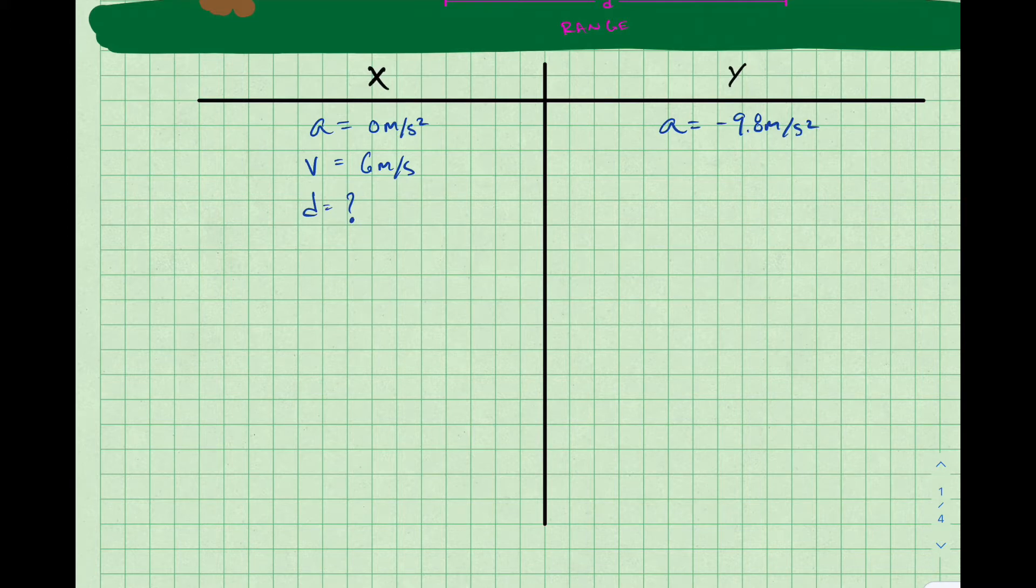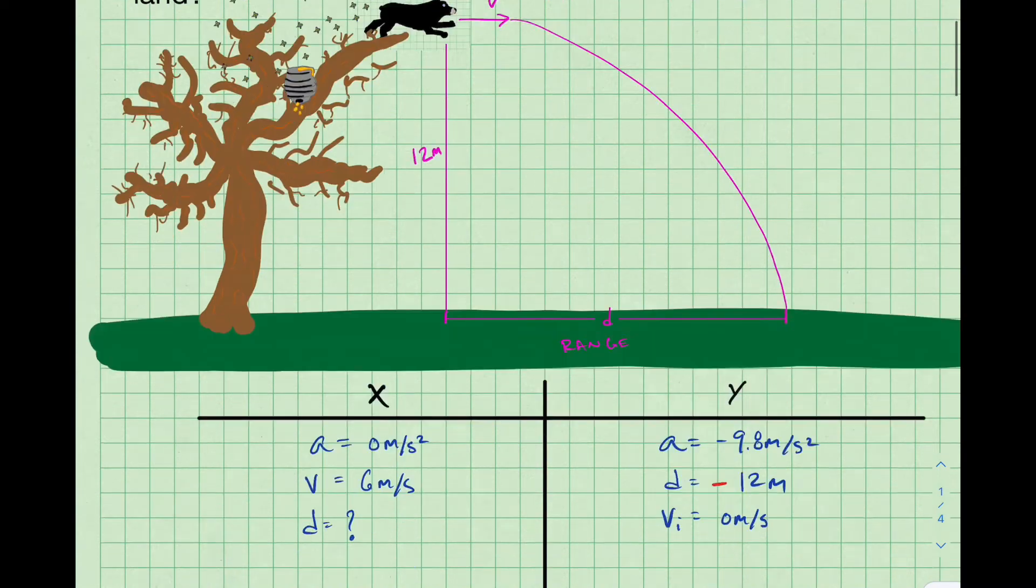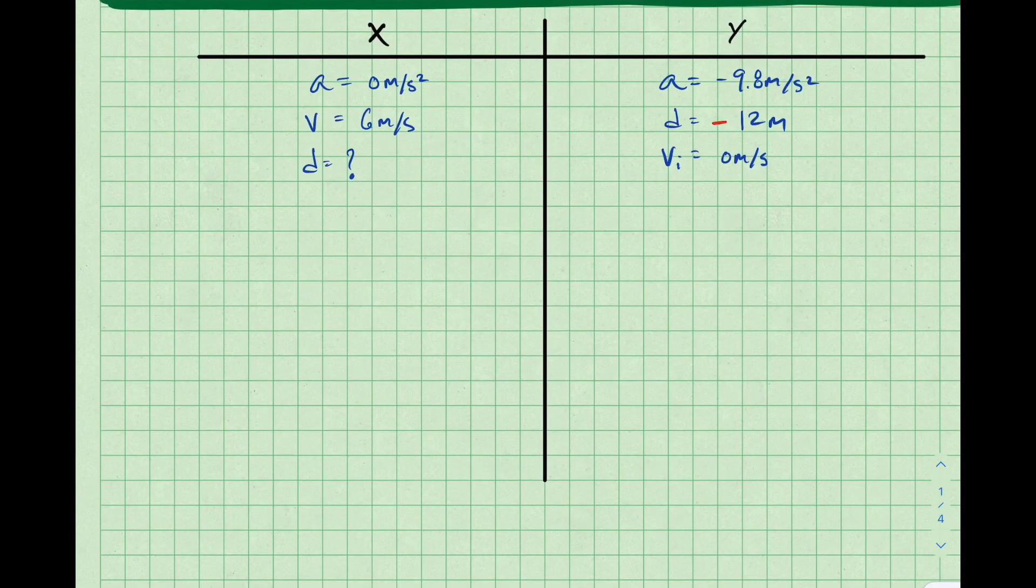Continuing, we have the information that's given to us. So we have our velocity, which is only in the x direction. It's a horizontal projectile. We have our displacement, which is negative 12 meters because the bear is going to end up 12 meters below where he started from. Our initial velocity in the y direction is zero because the bear is projected horizontally. So none of that six meters per second is in the y direction. It's all in the x.